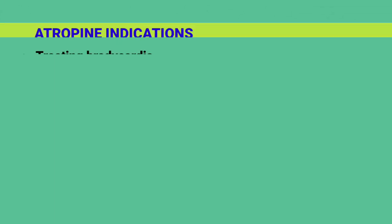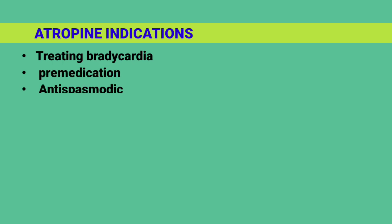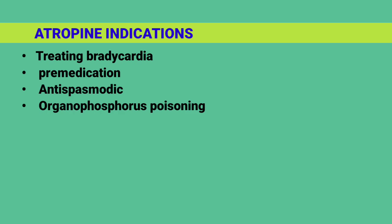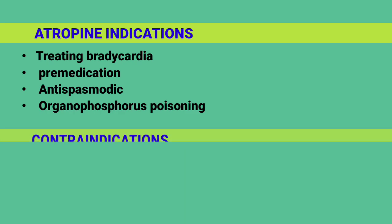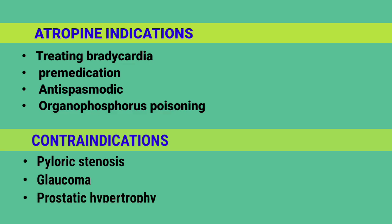Atropine indications include: treating bradycardia, pre-medication, antispasmodic use, and organophosphorus poisoning. Atropine contraindications include: pyloric stenosis, glaucoma, and prostatic hypertrophy.